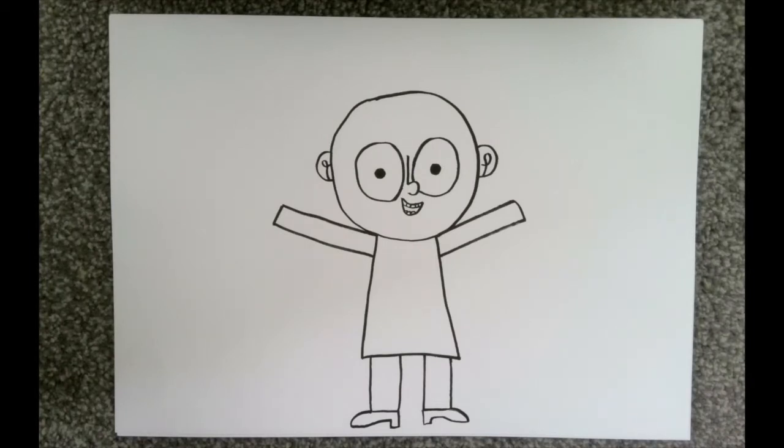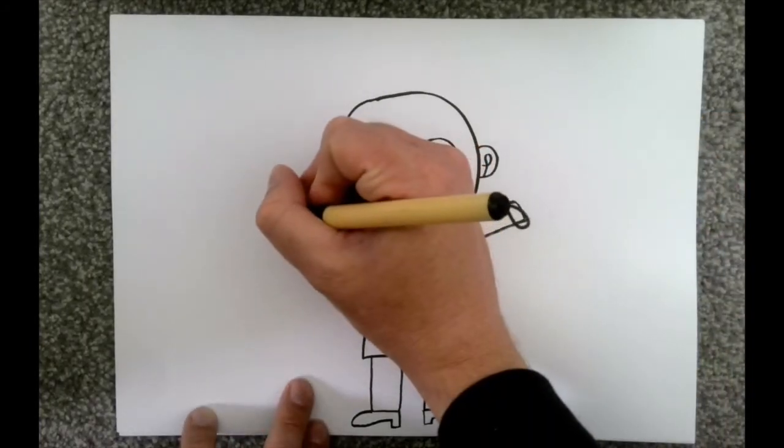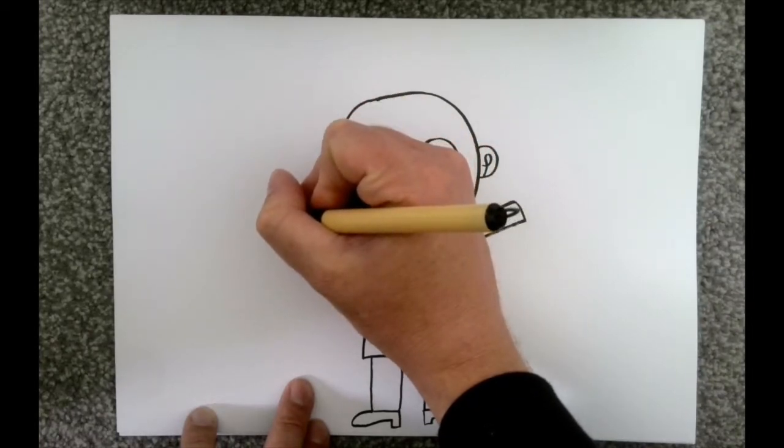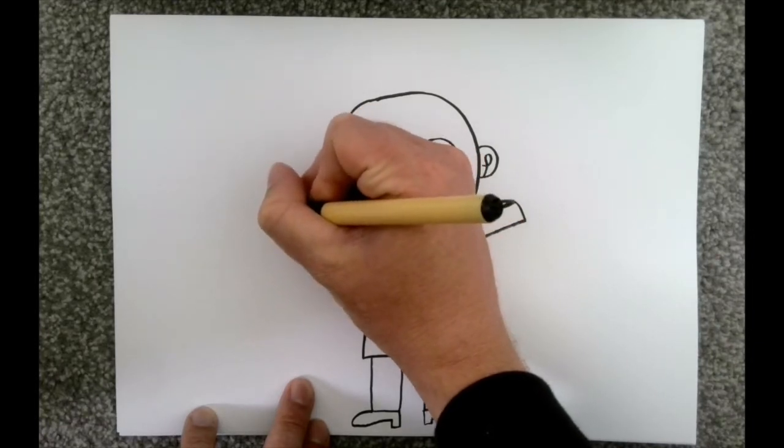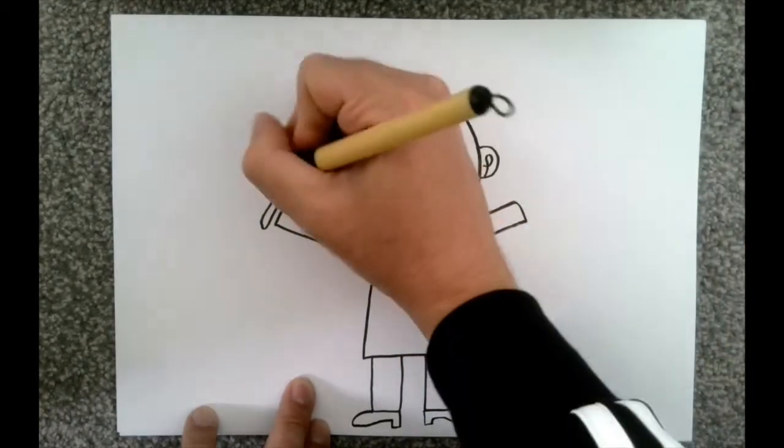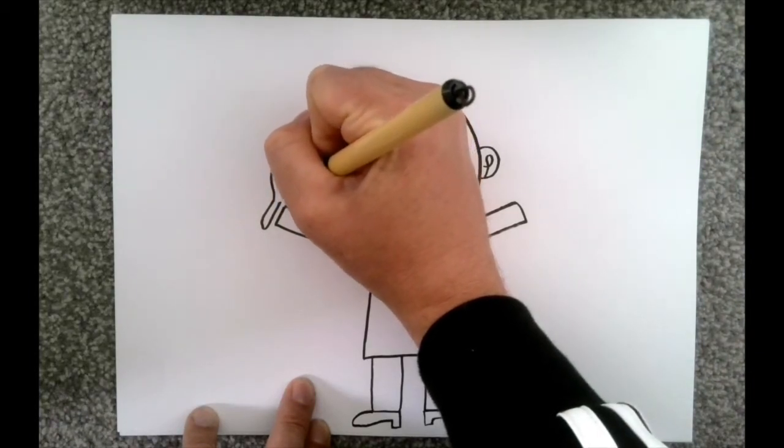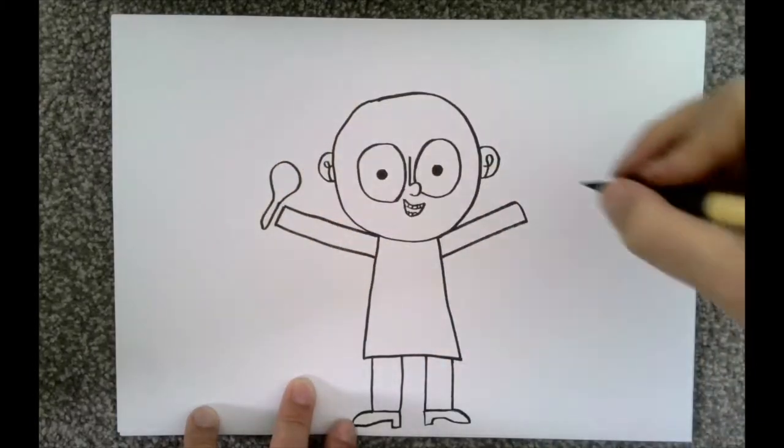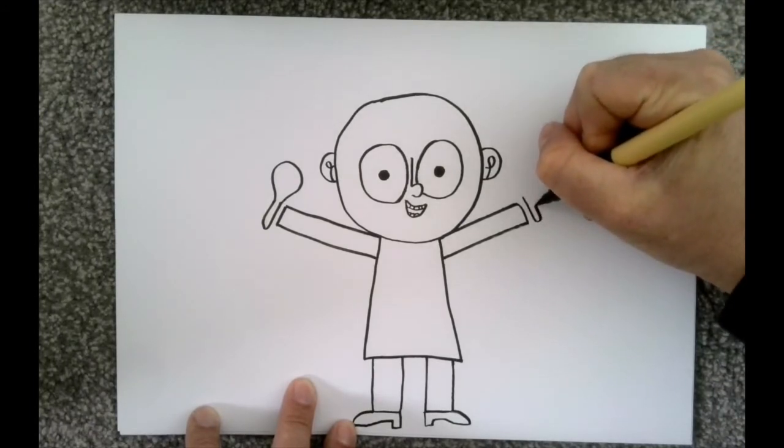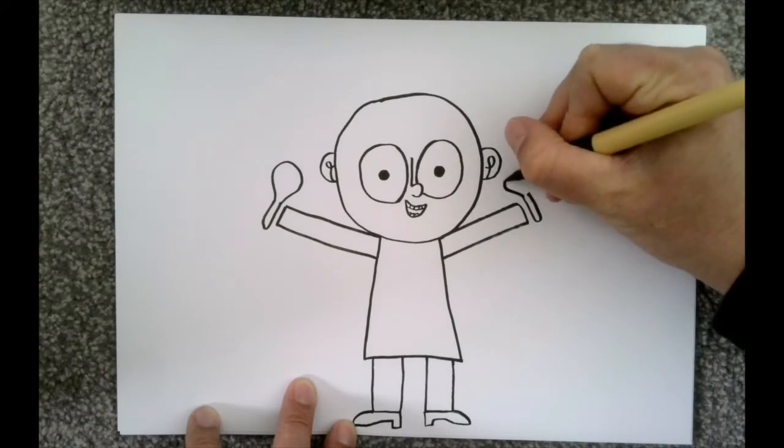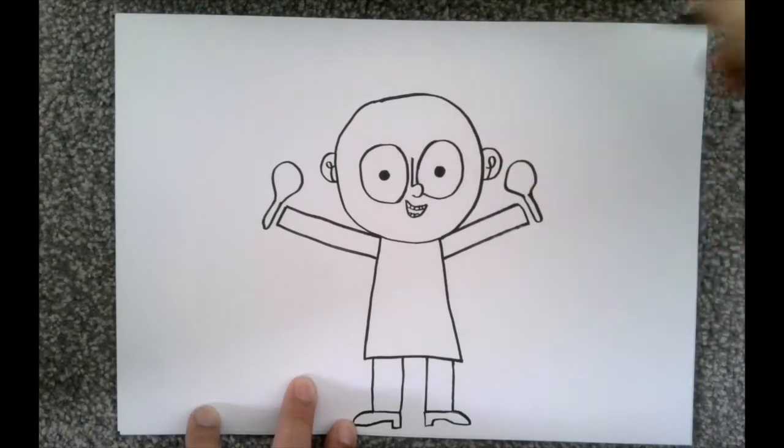The next thing we're going to do is we're going to add some details. So I'm going to draw this shape here. They're going to be holding something. I wonder if you'll be able to tell if it is from what they're holding. Looks like a spoon, doesn't it? It's not a spoon. Hopefully you'll see what it is very soon. And then we'll do the same shape this side. Around, down. It's a bit misshapen, but it doesn't matter too much.